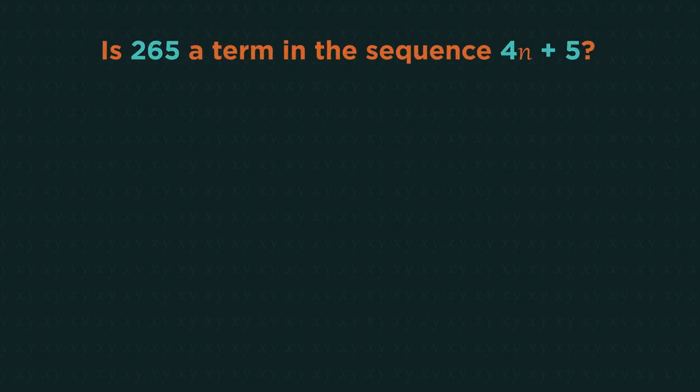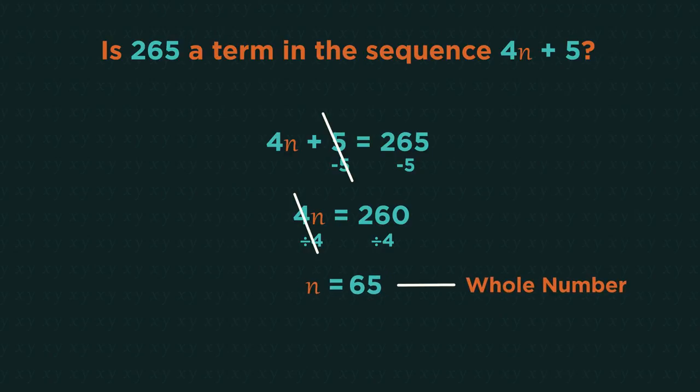Whereas for this question, because 65 is a whole number it means 265 is in the sequence. 265 is the 65th term in this sequence.